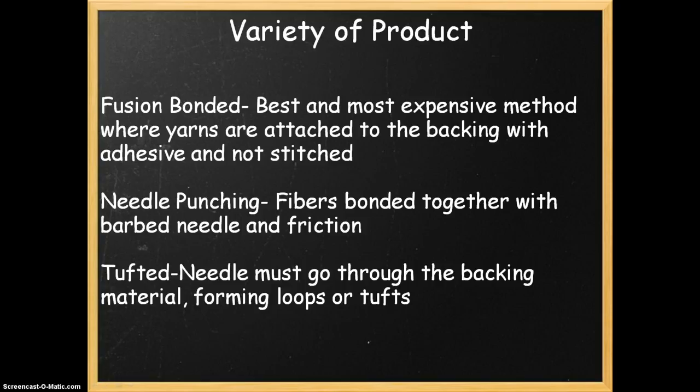The second method is needle punching, where fibers are bonded together with a barbed needle and friction, creating a material that is not woven or stitched. This isn't usually used to create carpet tile — it's just for regular carpets. The last method is tufting, the most common technique used in broadloom carpeting, produced by a machine where needles go through the backing material forming loops, also known as tufts.